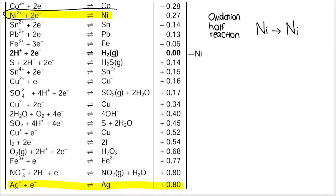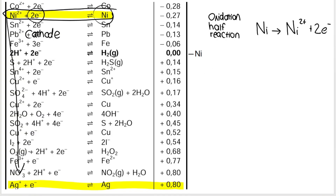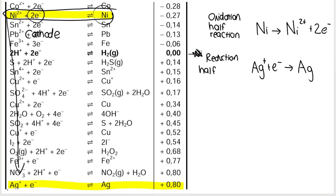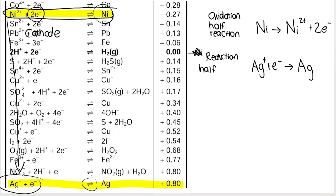Using Table 4B, the half reactions are as follows. Nickel is higher up on the table, so nickel is oxidized — we write it from right to left: Ni → Ni²⁺ + 2e⁻. Then reading further down the table, we get to the silver half reaction, and silver is reduced: Ag⁺ + e⁻ → Ag. I'm trying to line up my arrows. This is my reduction half reaction, written from left to right. Remember, half reactions are only written with a single arrow, never a double arrow.